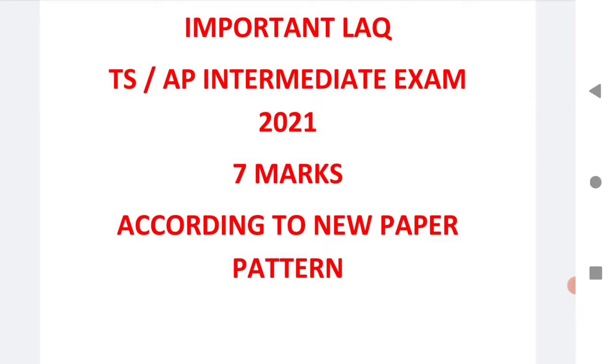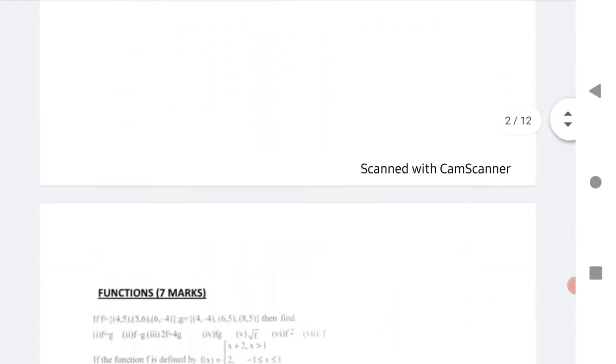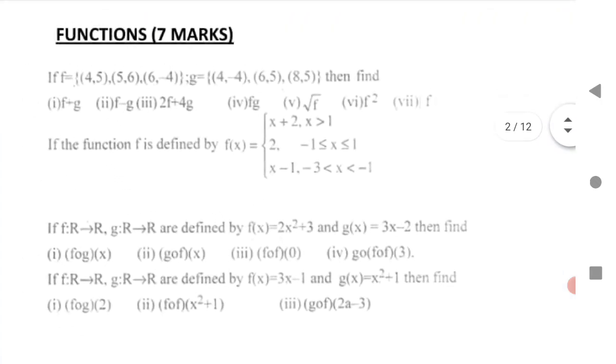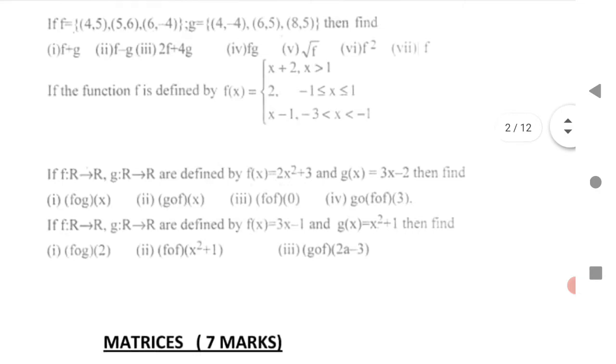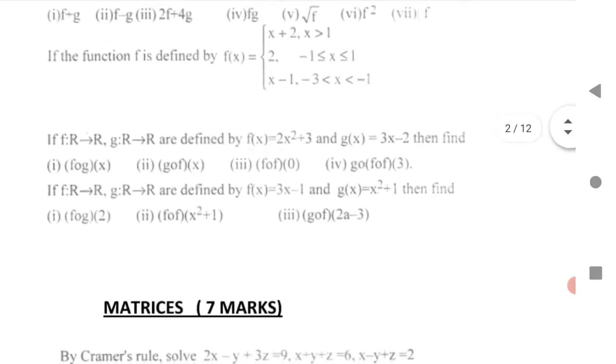For Mathematics 1A 7 marks questions, the first chapter is Functions. I have given the questions here. F is given, G is given, you need to find F+G. Second question: if function F is defined as F(x) equals so and so. Next, F(x) and G(x) are given, find F(G(x)), G(F(x)), and F(F(0)). Four questions are there, the fifth one is very important.